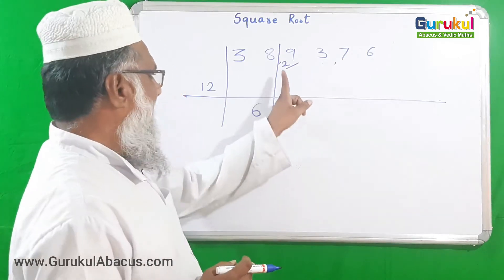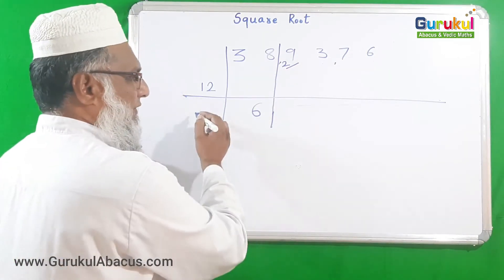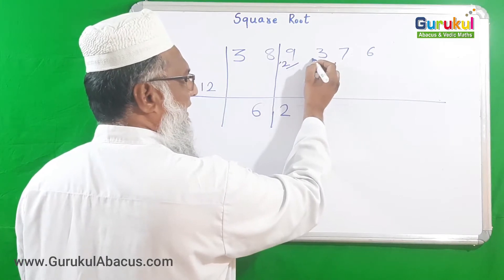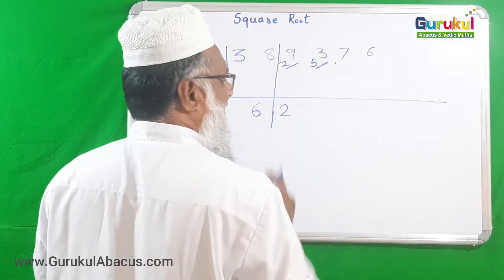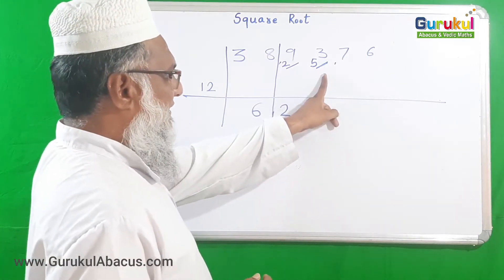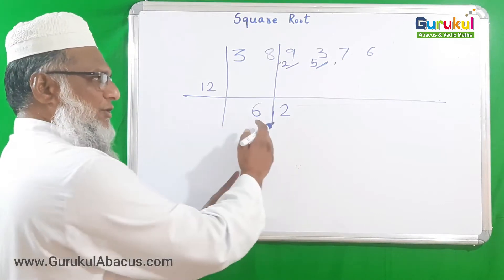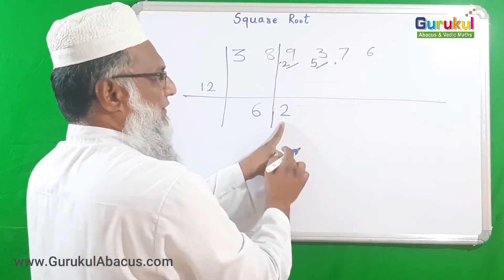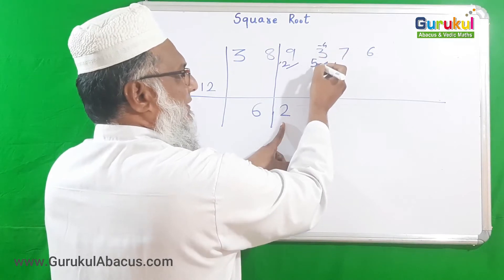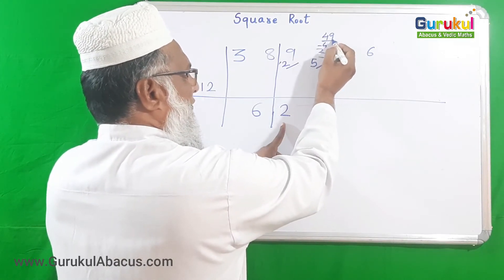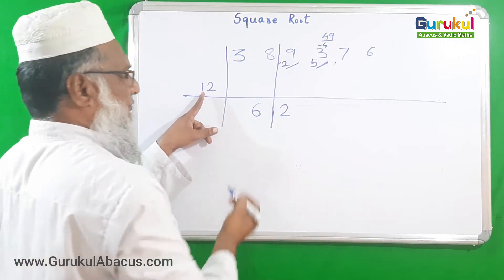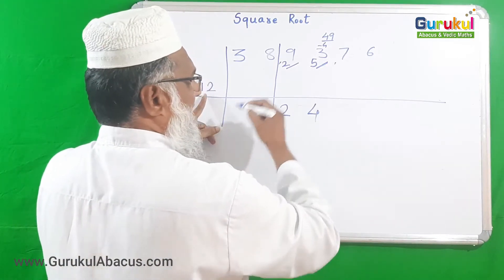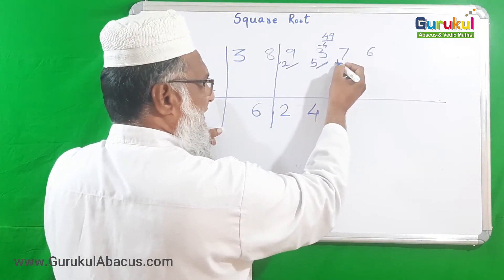Now we have 29 and divisor 12. We try 12 × 2 = 24, which is suitable. Subtracting 24 from 29 leaves 5. Bringing down the next digit gives 53. Before using 53, we subtract the dvandva of 2, which is 2 squared = 4. So 53 minus 4 = 49. Then 49 minus 48 leaves 1, which we carry forward.